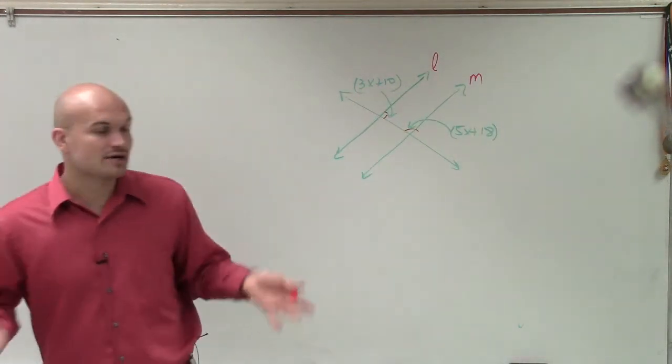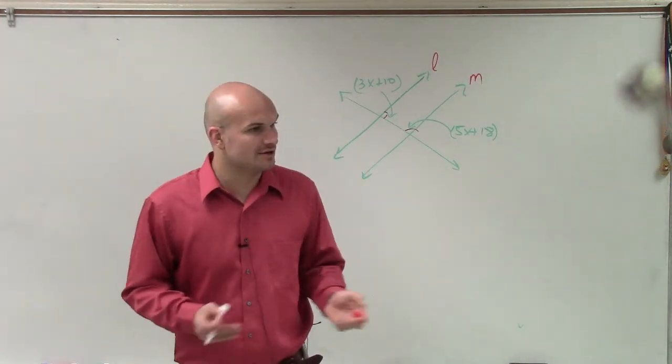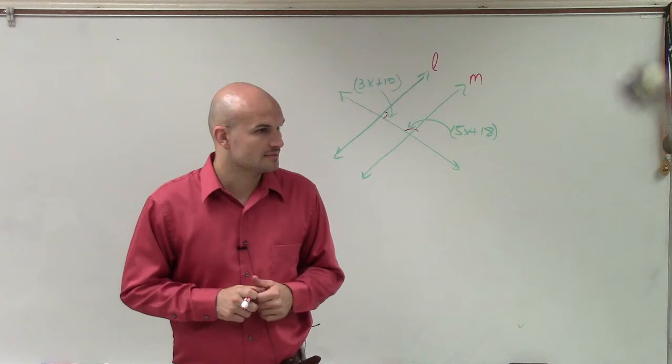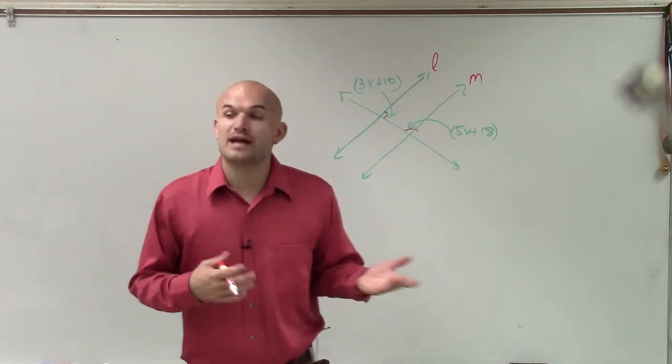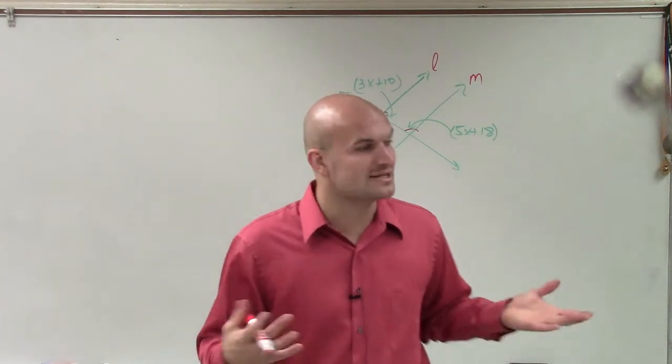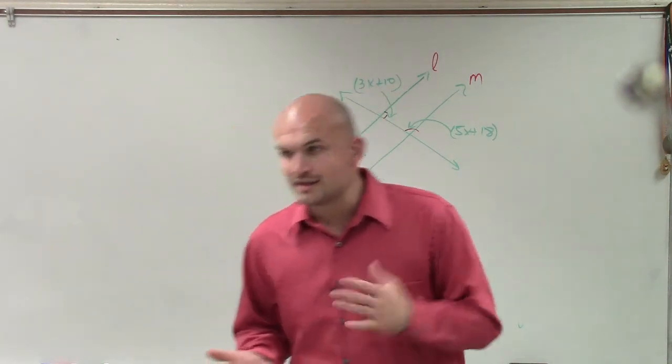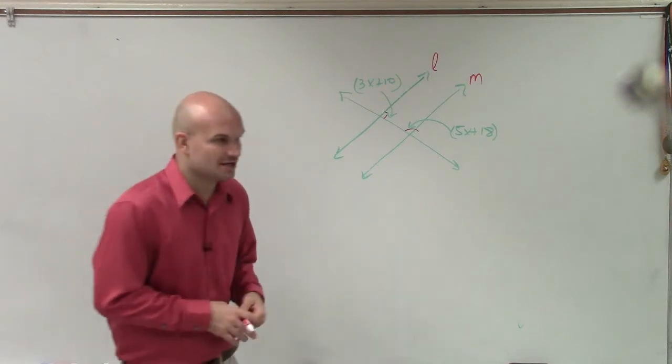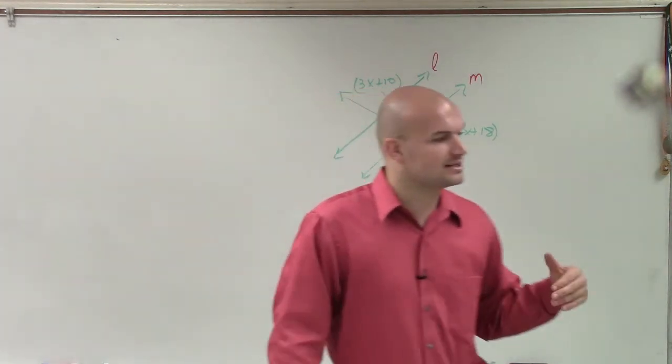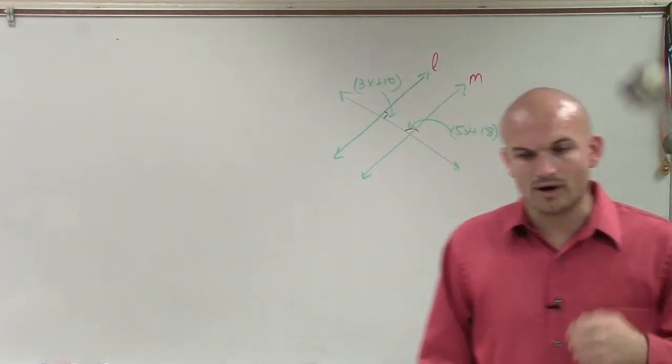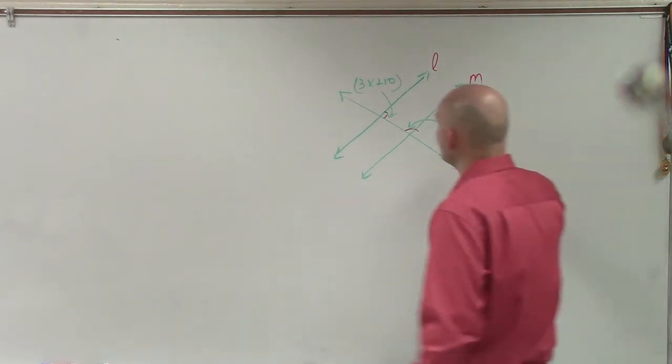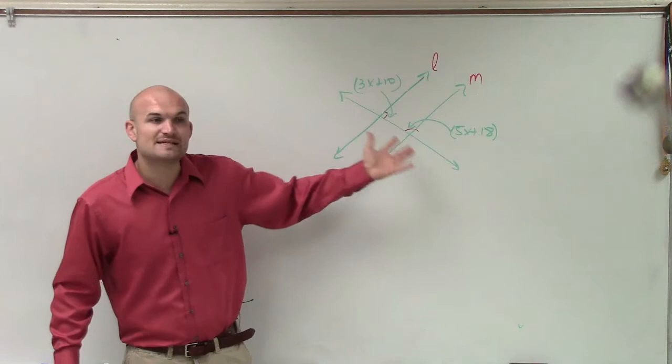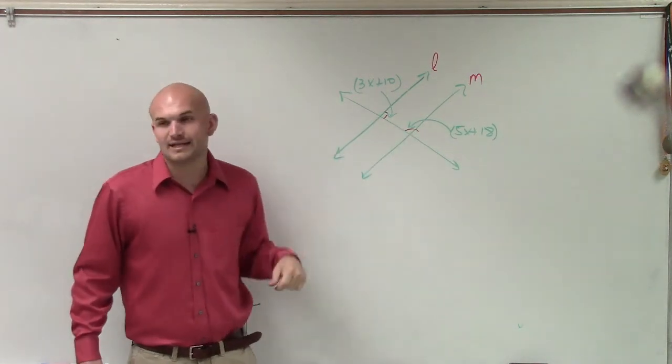Now, how do consecutive interior angles relate to each other, though? They're supplementary. They're what? They are supplementary. So remember, what supplementary says is the sum, the addition of both angles, is going to equal 180 degrees. And what our converse theorem states is for consecutive angles. If these two angles add up to equal 180, then our lines, L and M, are parallel.